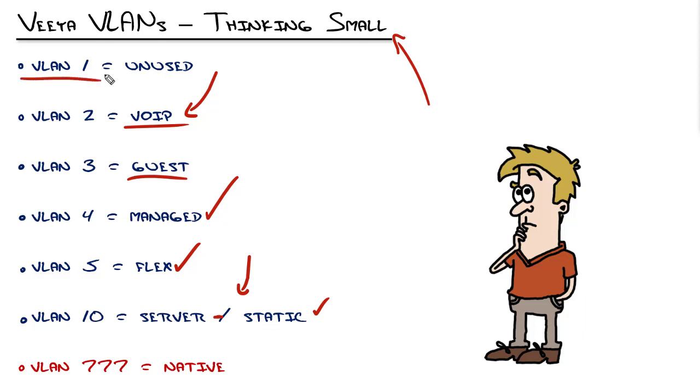First off, VLAN 1 is a security best practice not to use. Why is that? Well, because it's the default VLAN and everything is a member of VLAN 1 out of the box. So a lot of times it's very easy to miss a port that's assigned to a VLAN that is the default.